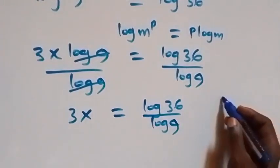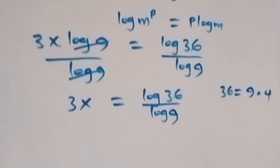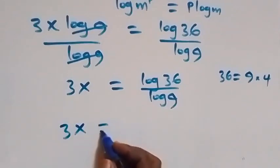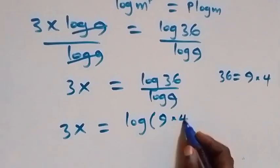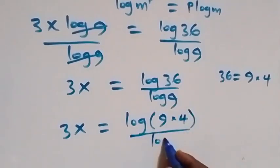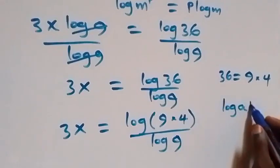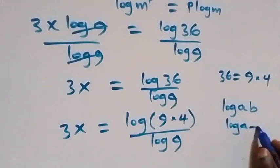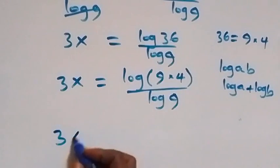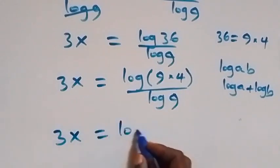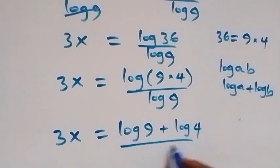At the next step, 36 can be written as 9 times 4, so what we have becomes 3x equals log of (9 times 4) over log 9. This follows from the log rule: log(a times b) equals log a plus log b. So 3x equals log 9 plus log 4, all over log 9.